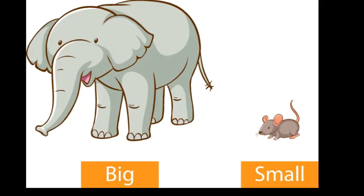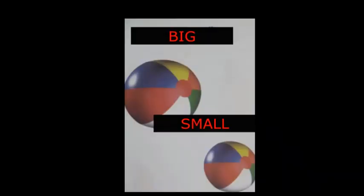Here is an elephant and a rat. Elephant has a big body, that's why we call it big. And the rat has a small body, that's why we call rat small. Big elephant, small rat.